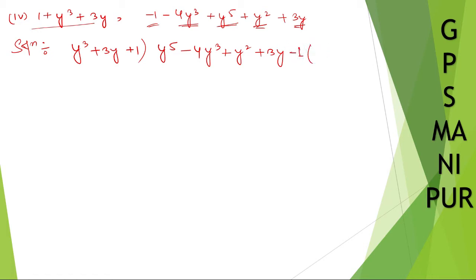Now y cube into y square, it will be y to the power 5. 3y into y square, 3y into y square it will be plus 3y cube. 1 into y square it will be plus y square. Change the sign. Plus will become minus. Plus will become minus. Plus will become minus. Cancel.